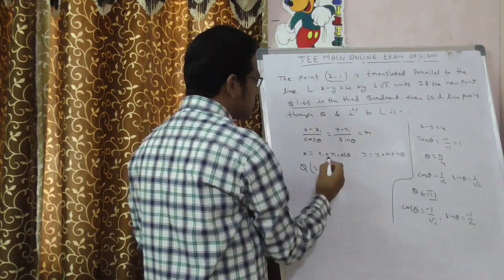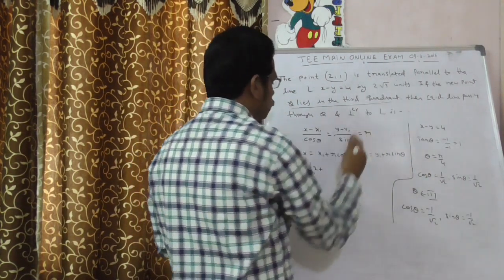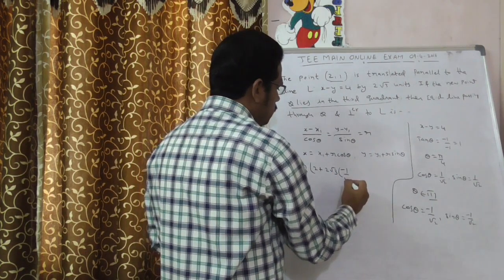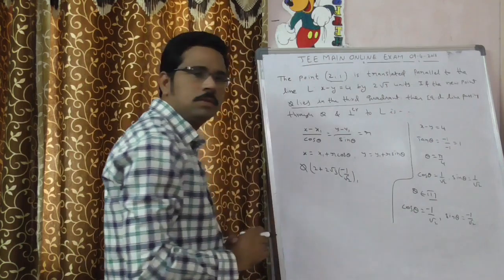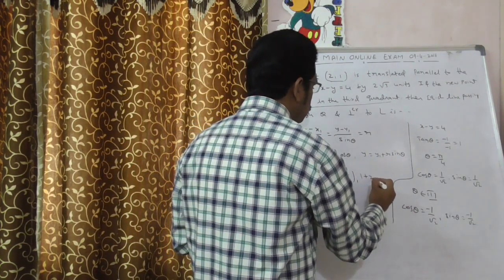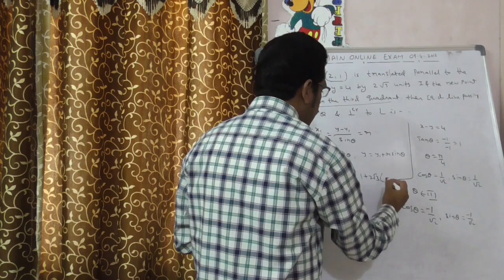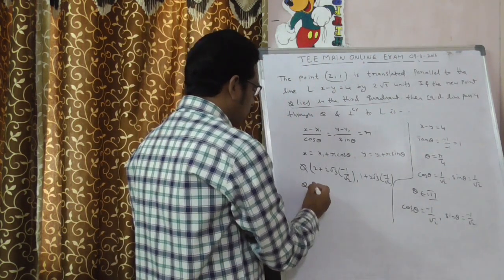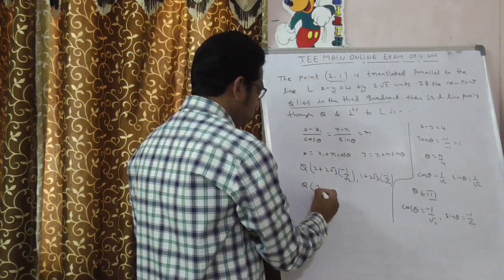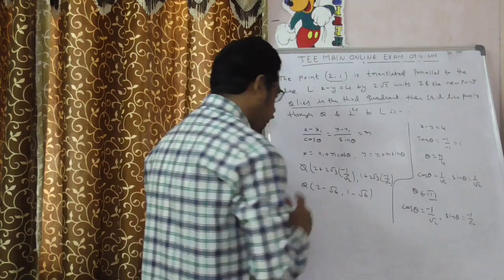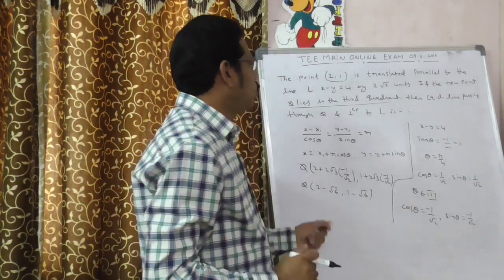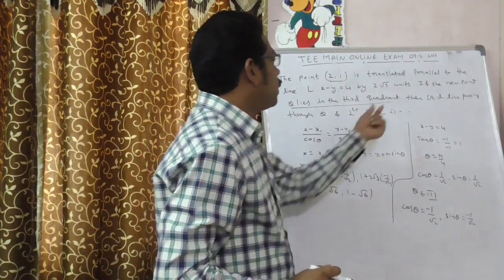Now, apply all the values here. The q point is x1 plus r cos theta. What is x1? 2 plus r. What is r? 2 root 3 units. Cos theta is minus 1 by root 2. y1, what is y1? 1 plus r 2 root 3 sin theta again minus 1 by root 2. So, this is nothing but 2 minus root 6 comma 1 minus root 6. So, here you got q point.